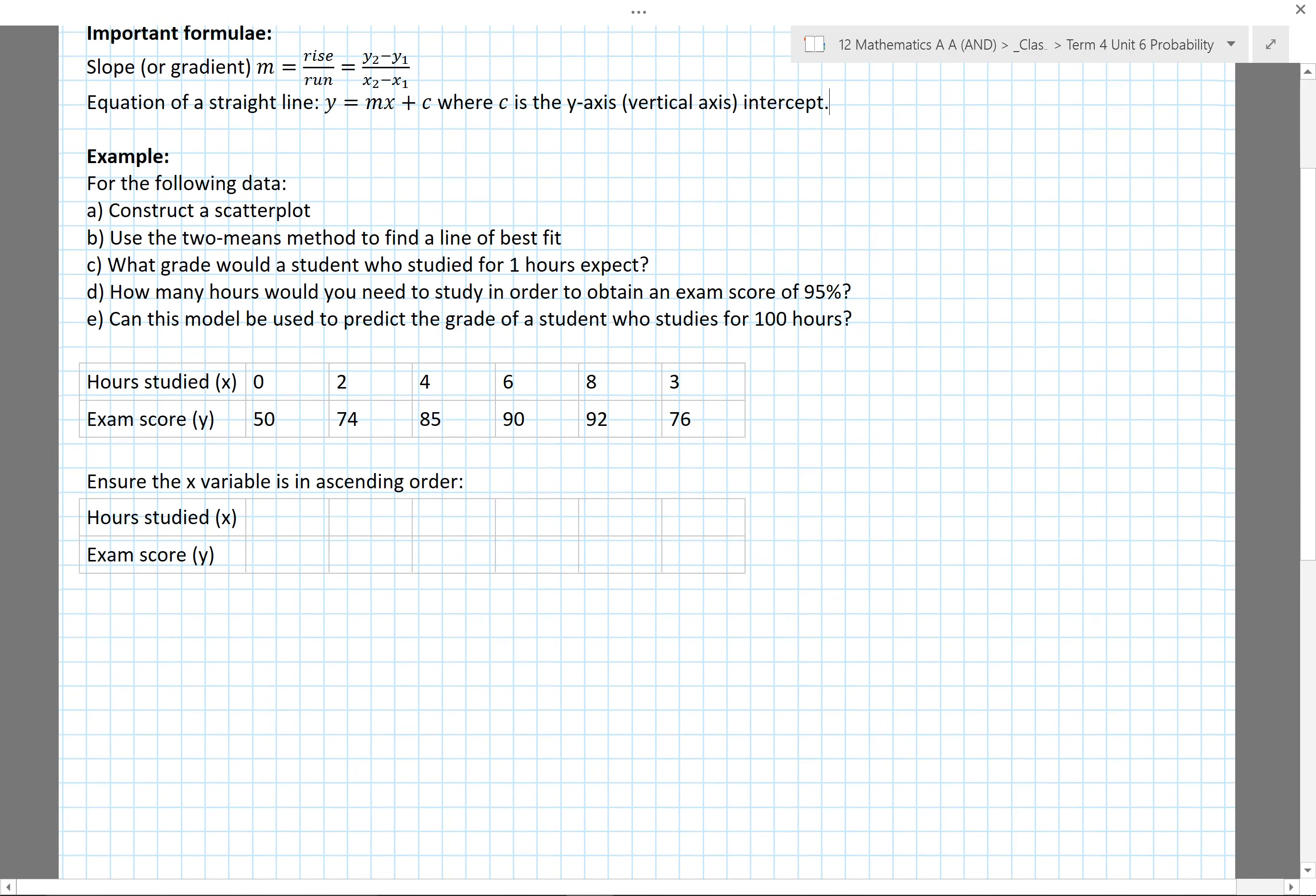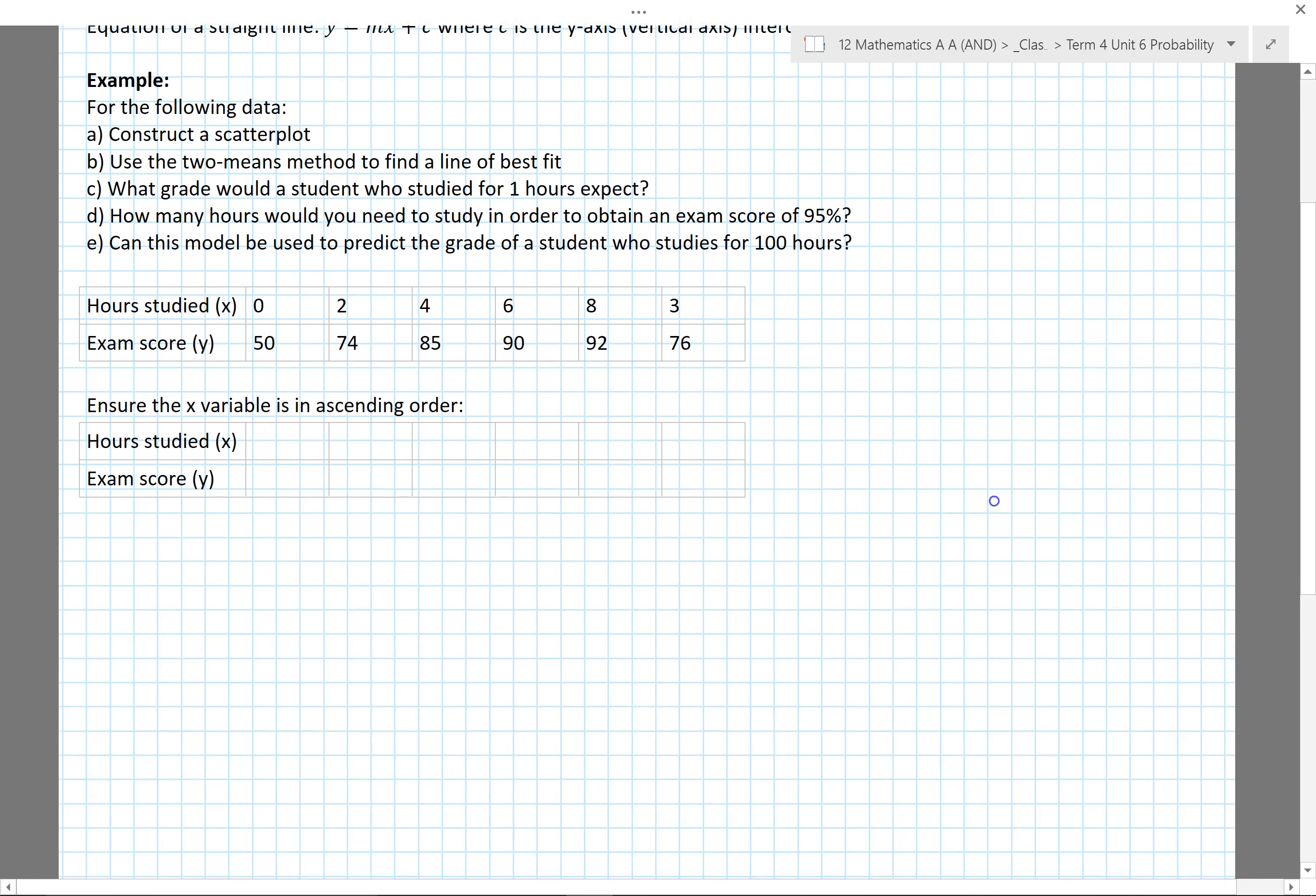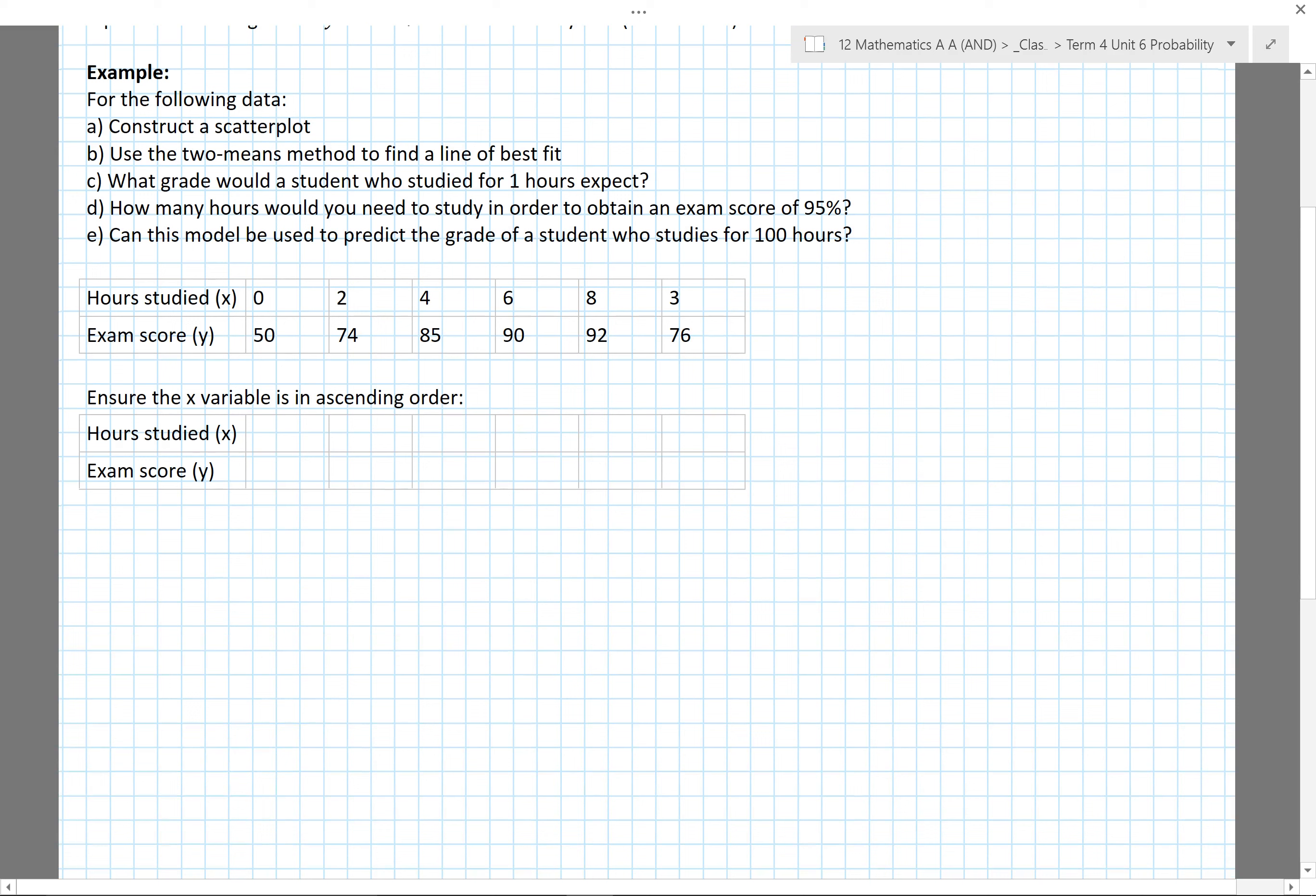In this example we've got some data from students who were asked how many hours they studied for an exam and their exam score was recorded. For the two means method, the first thing we need to do is ensure this is in ascending order according to the independent variable x. Looking through my x data, is this in order? No it's not.